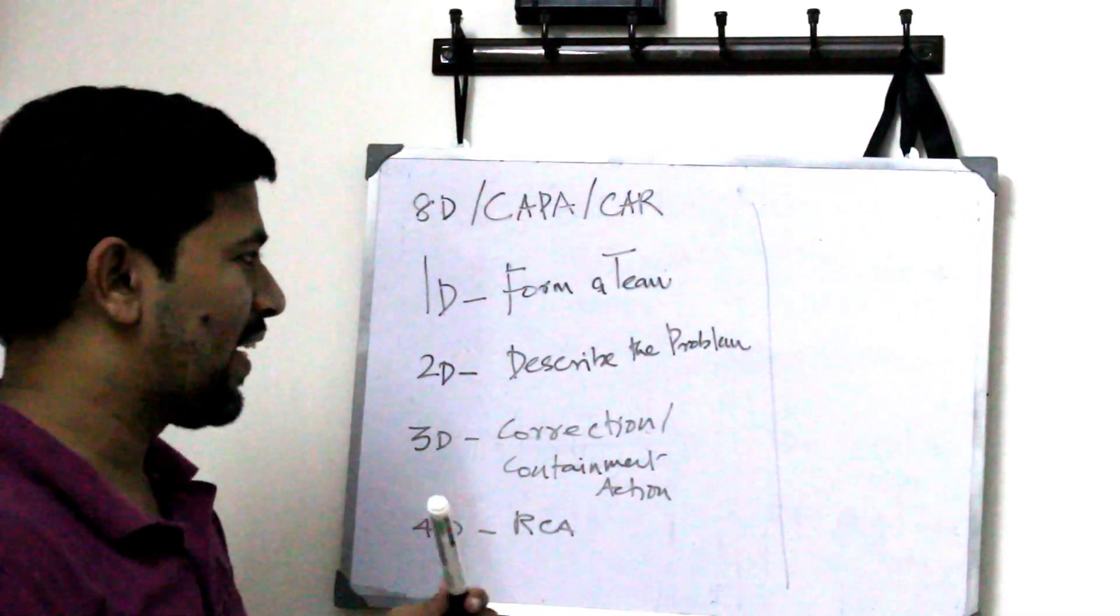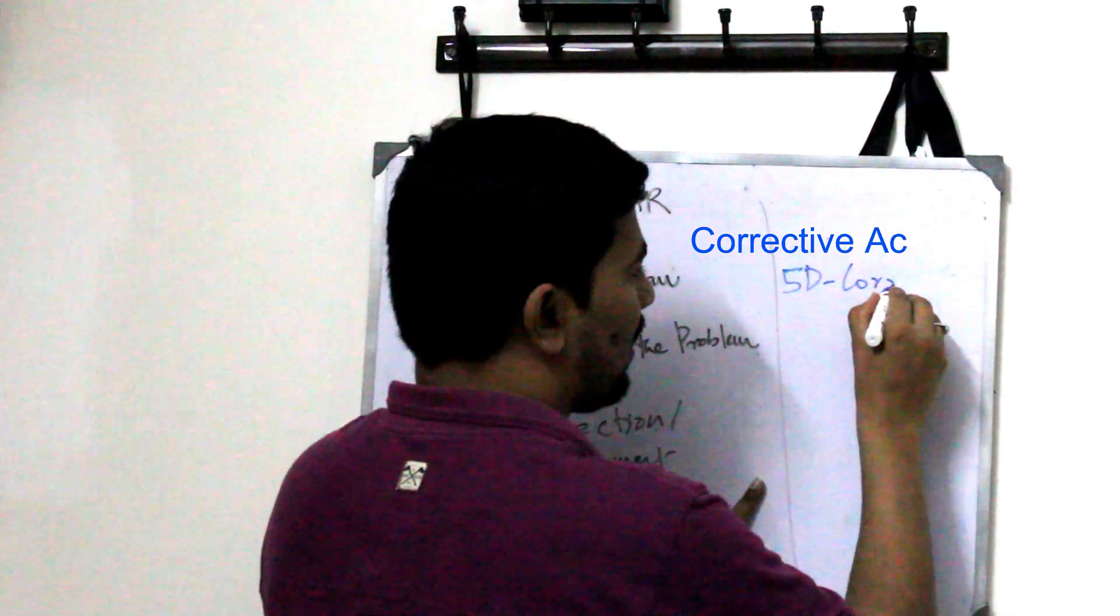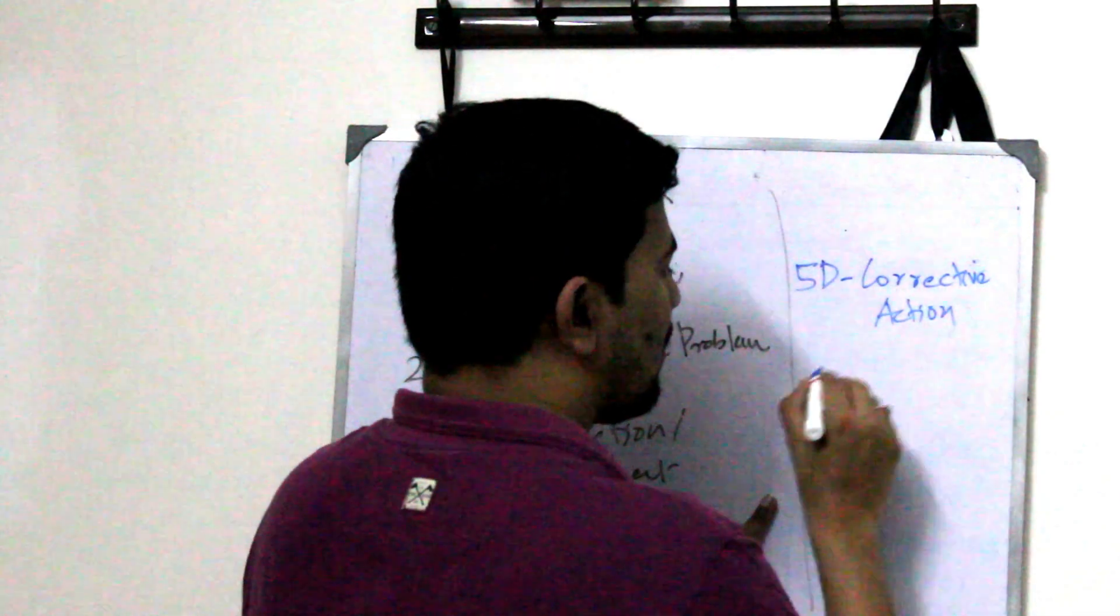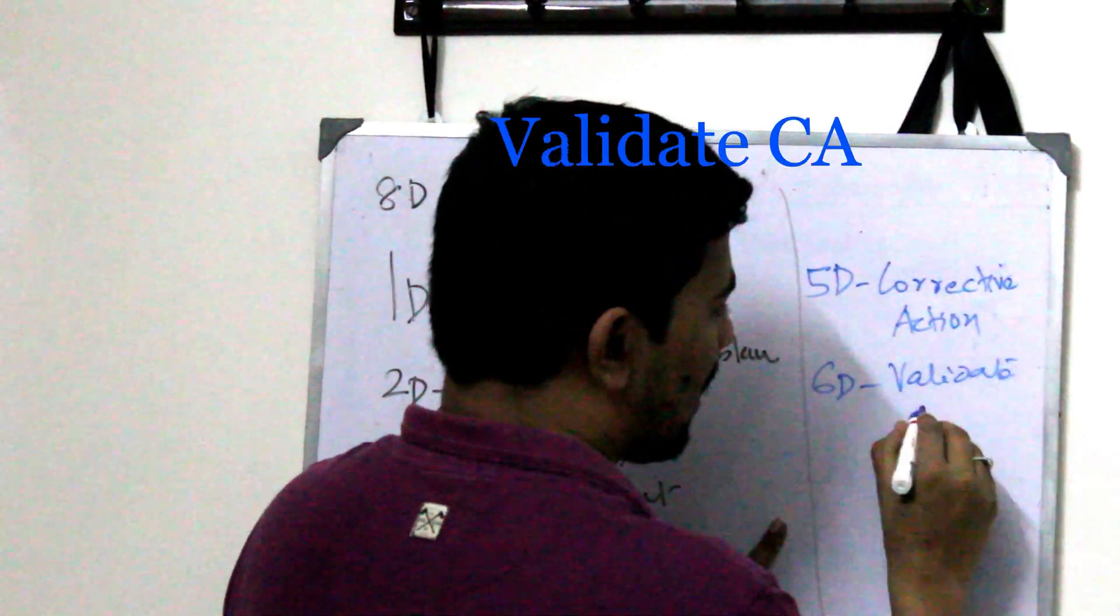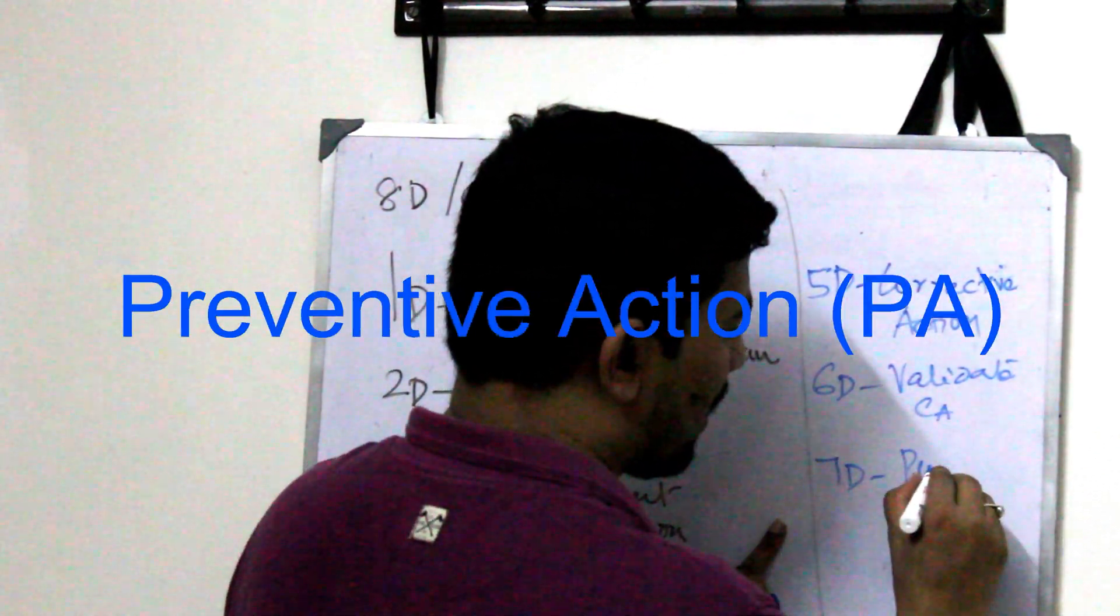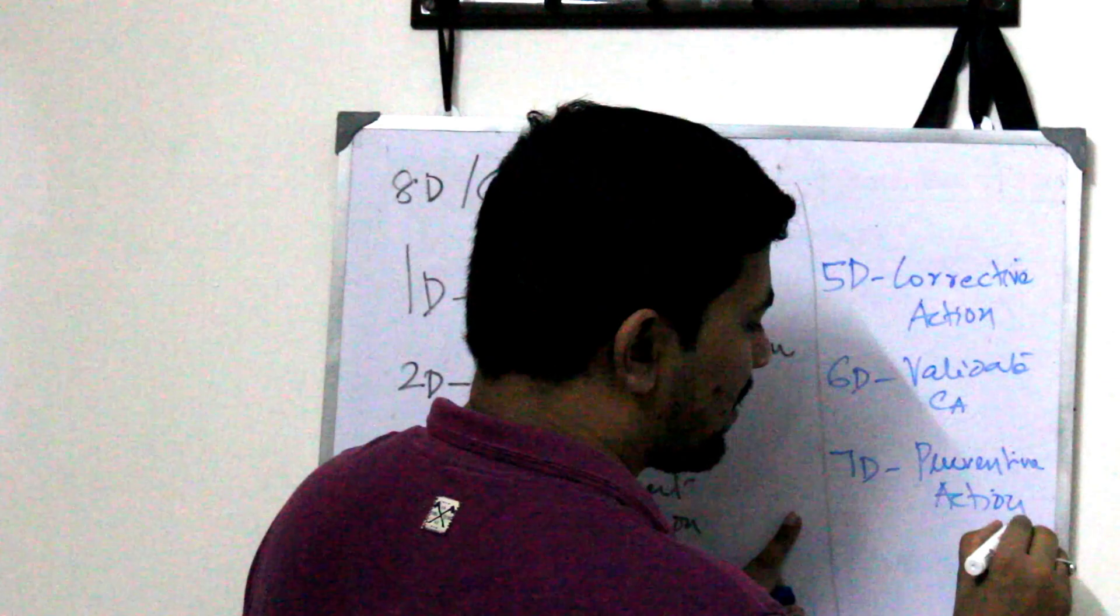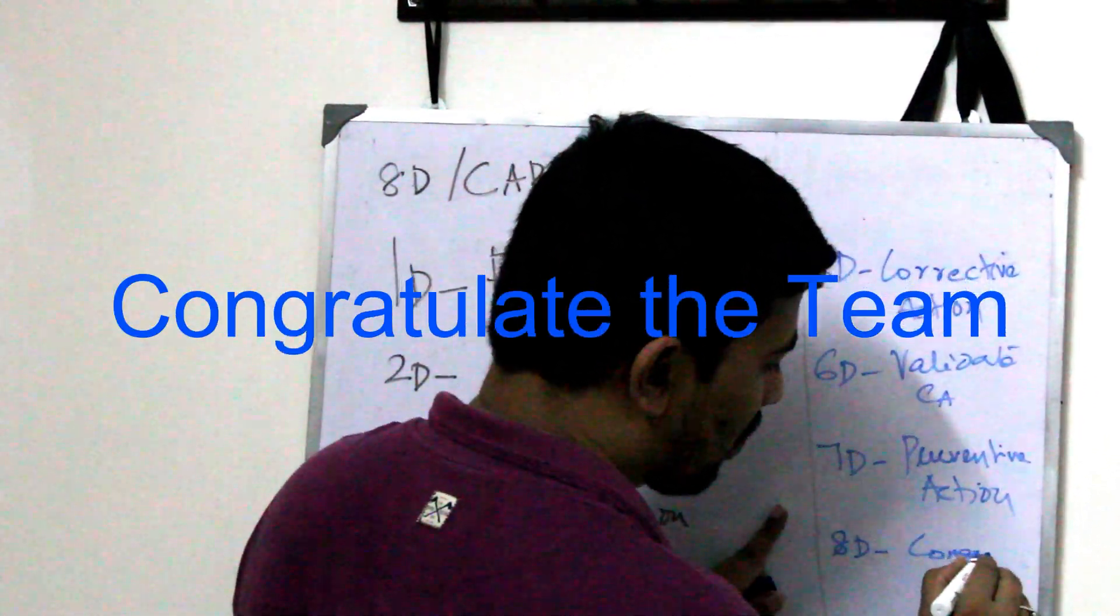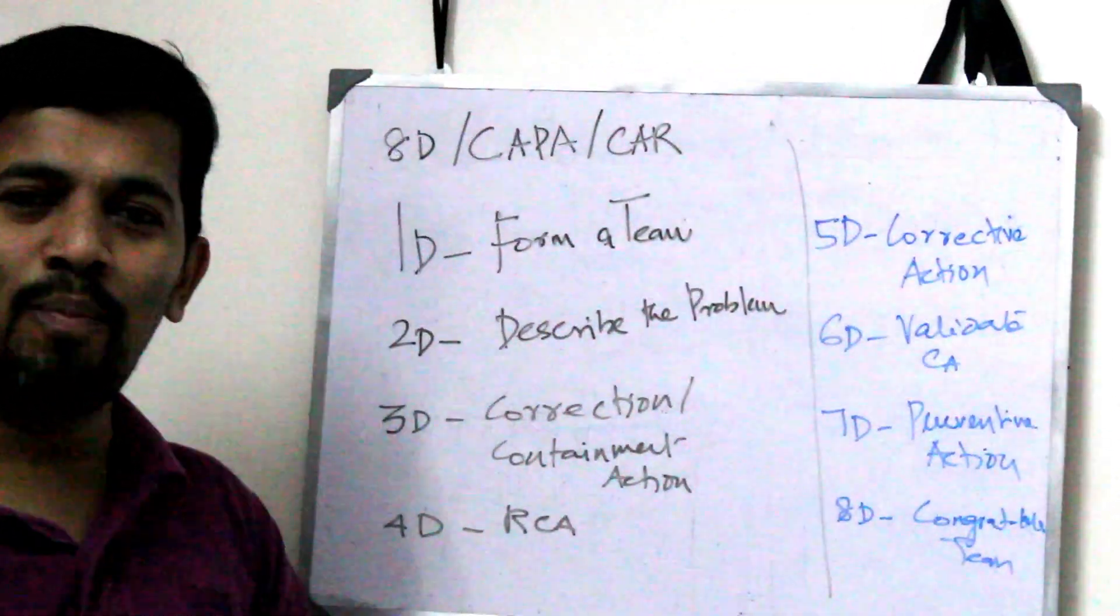Let's go to 5D. 5D you have corrective action. 6D is called validate the corrective action. 7D is called preventive action. And the last D you have 8D. That is congratulate the team. So this is all about 8D.